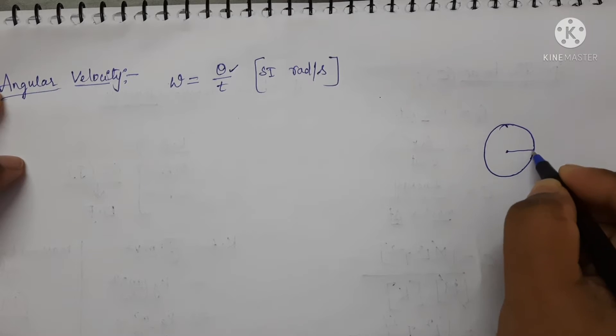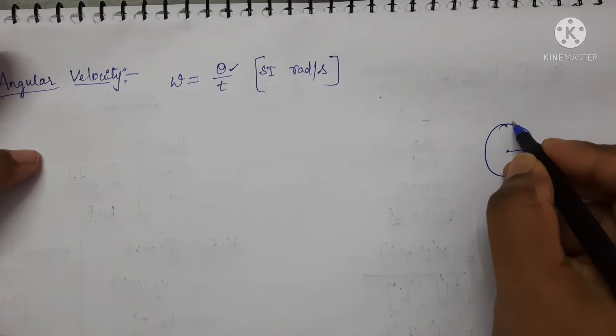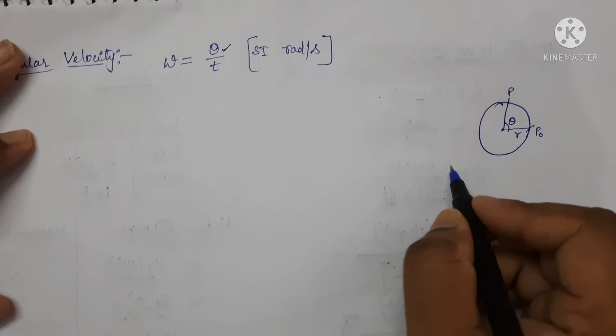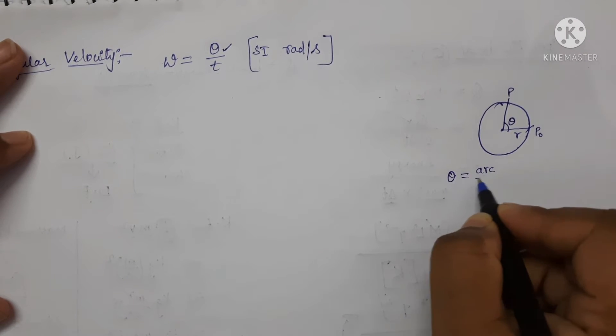Consider a circle of radius R. Initially, the particle is at here P0. After some time interval, the position of a particle is here at P. So, formula for angular displacement is equal to arc upon radius.